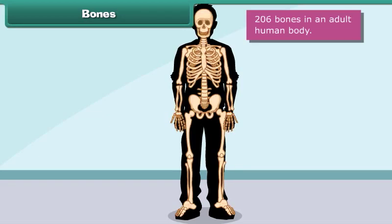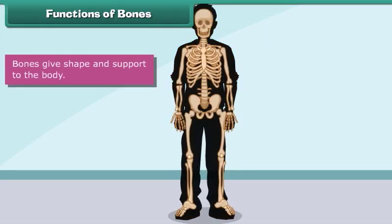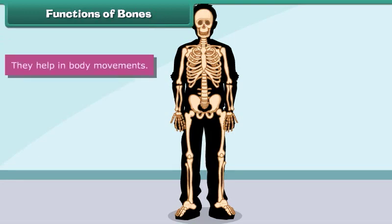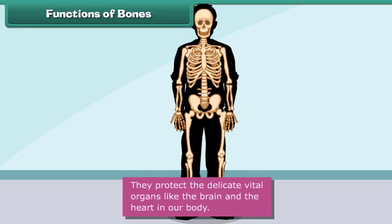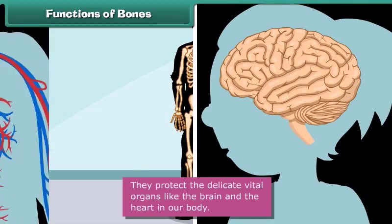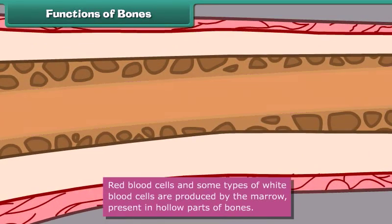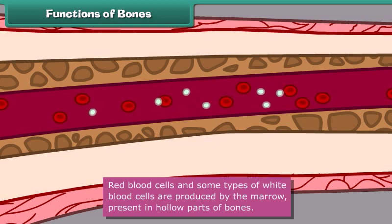What functions do bones perform? Come, let us know. Bones give shape and support to the body. They help in body movements. They protect the delicate vital organs like the brain and the heart in our body. Red blood cells and some types of white blood cells are produced by the marrow present in the hollow parts of the bones.